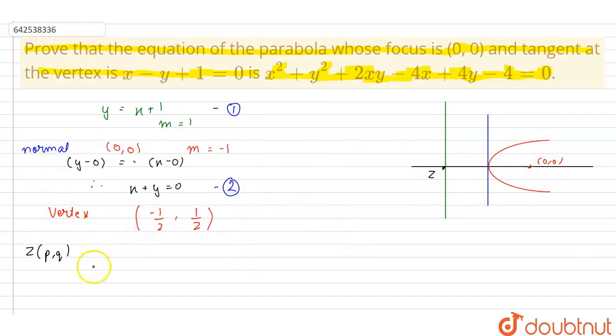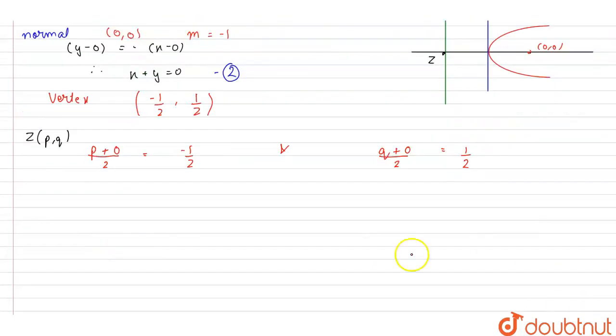we can write that (p + 0)/2 = -1/2 and (q + 0)/2 = 1/2. From here, we will get p and q as p = -1 and q = 1. Therefore, the coordinates of Z are (-1, 1).